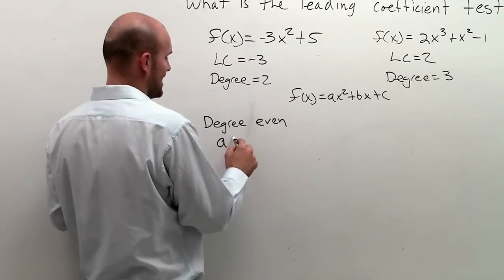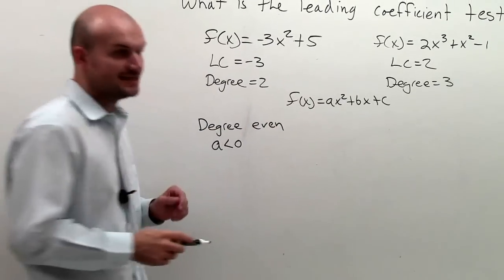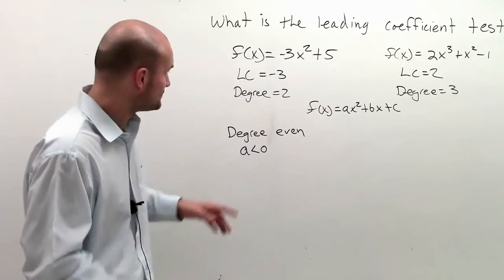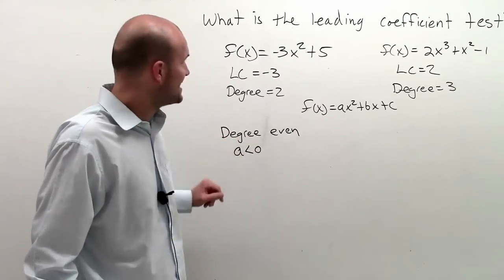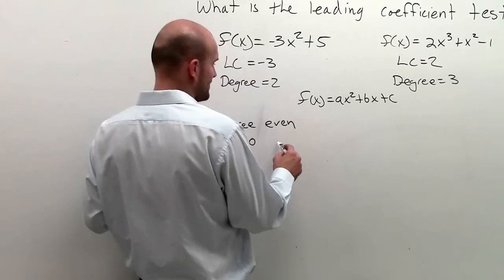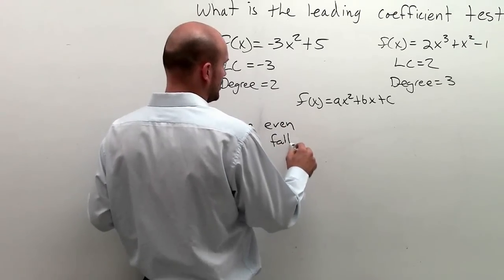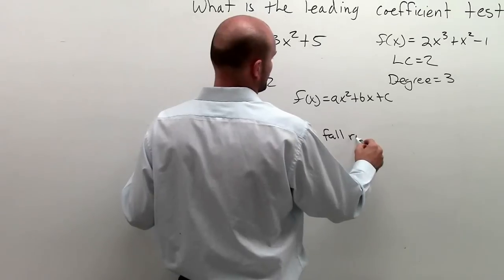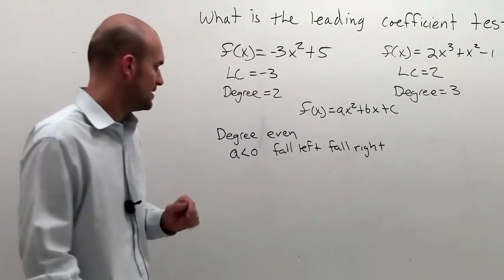Then, let's say when a is less than 0, I'm going to give you guys a shorthand, and then I'll give you a little bit more mathematical one. Now, when a is less than 0 and your degree is even, your graph is going to fall left and then fall right.